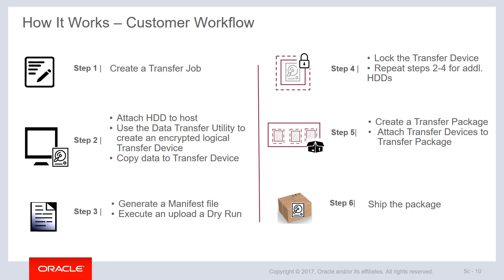If there are naming conflicts, the customer will need to delete the appropriate files and run the report once more. Finally, run the lock command using the data transfer utility to lock the transfer device. Repeat these steps for any additional transfer devices. Once complete, create a transfer package and select the transfer devices to be sent to Oracle. Package and ship the transfer devices with your preferred vendor, and be sure to record the tracking number in the OCI management console so that the Oracle team can also track the package through the delivery process.